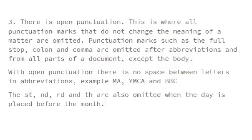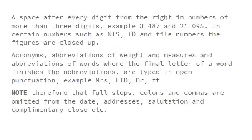The ST, ND, RD, and TH that are normally placed on numbers — for example '2nd' in '2nd February' — are always omitted when the day is placed before the month. Also, a space is used after every digit in written numbers of more than three digits. For example, 3 487 instead of 3,487, and 21 095 instead of 21,095. In certain numbers such as NIS numbers, ID numbers, and file numbers, the figures are closed up.